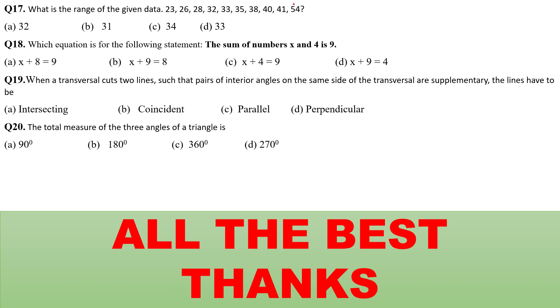What is the range? Range. How to find out the range? Maximum and minimum number difference is called the range of a data. So, 54 minus 23, that is 31 is the correct answer. Which equation is for the following statement? The sum of the number x and 4. It will be x plus 4. Then it is equal to 9. C is the correct answer. When a transversal cuts two lines such that the pair of interior angles on the same side of the transversal are supplementary, the lines have to be parallel. Very good property. The total measure of the three angles of a triangle is 180 degrees. So, these 20 questions within 3 minutes you have completed.